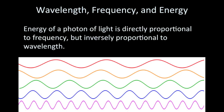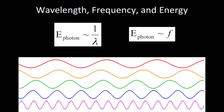The energy of a light wave or photon is directly proportional to the frequency — so the bigger the frequency, the bigger the energy. But it's inversely proportional to the wavelength, so big wavelengths mean low energy and short wavelengths mean big energy. We can write this in shorthand: the energy of a photon is proportional to one over the wavelength, or inversely proportional to the wavelength; equivalently, the energy of a photon is directly proportional to the frequency.